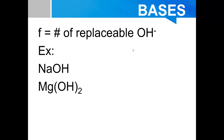For bases, F is the number of replaceable OH — the number of replaceable hydroxides. For sodium hydroxide, you only have one OH, so F equals 1. For magnesium hydroxide, you have two, as represented by the subscript — so F equals 2.